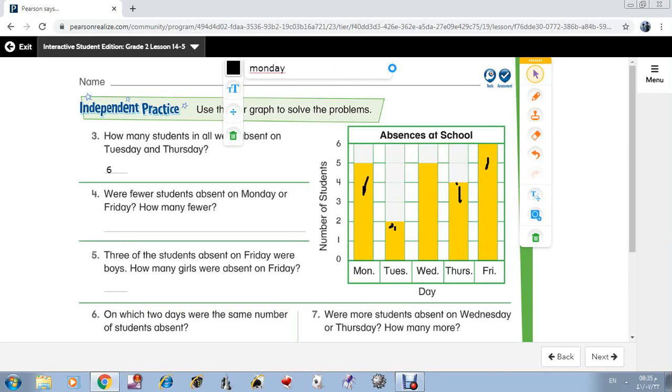And how many fewer? How many fewer? 6 minus 5? Yes, so one fewer.